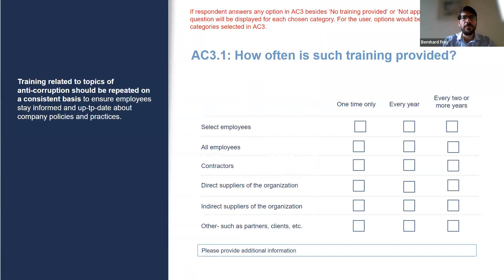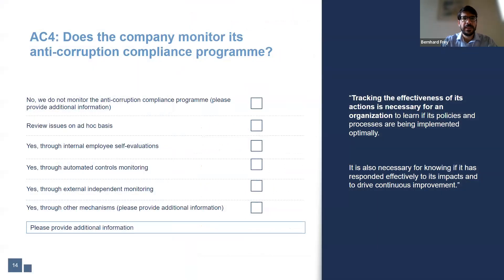AC-3 follow-up appears if a company answers any option besides 'no training provided' or 'not applicable.' Providing consistent training on anti-corruption topics helps employees and senior management remain knowledgeable about potential incidents and up to date with any recent changes in company policy. AC-4 asks about if and how the company monitors its anti-corruption compliance program. Without tracking the effectiveness of compliance practices, a company can't assess how it can drive continuous improvement. Companies should use the space provided to detail the type of monitoring performed.